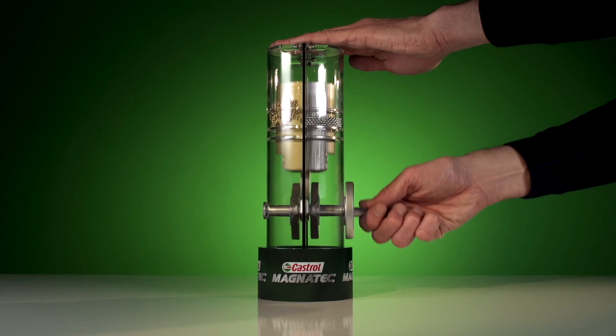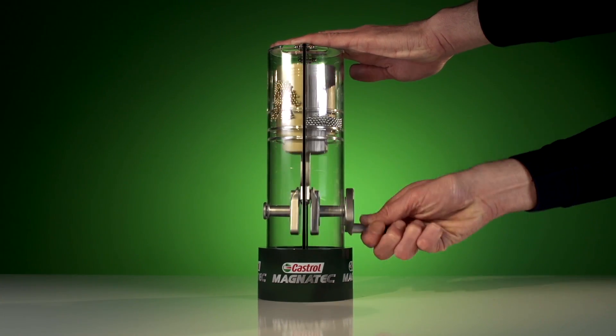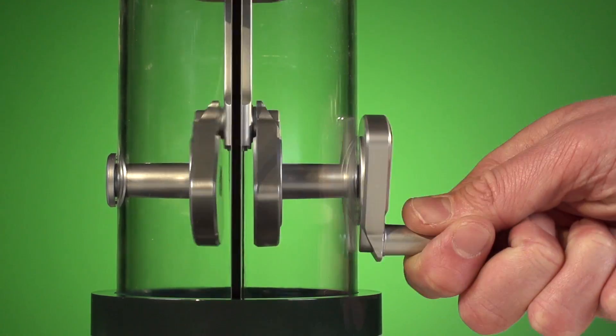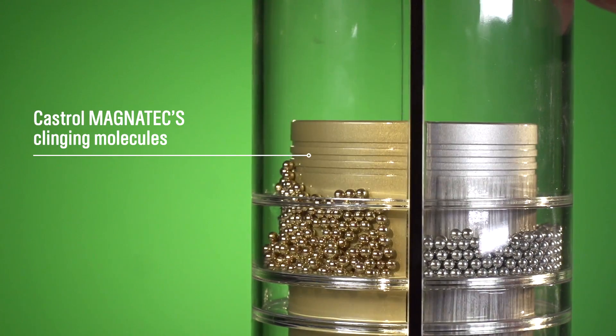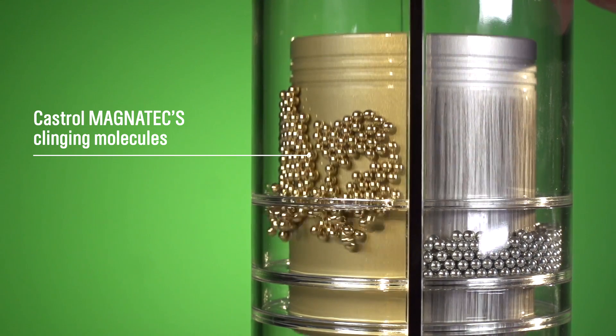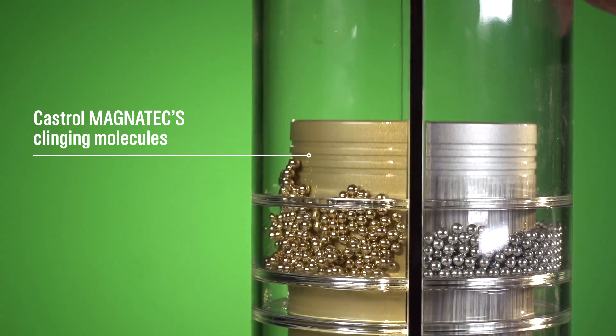These molecules can be seen in action in the Castrol Magnatec piston demo. This represents the critical parts of an engine. As you turn the handle, the ball-bearing molecules on the Castrol Magnatec side cling to the metal surfaces, providing an extra layer of protection.